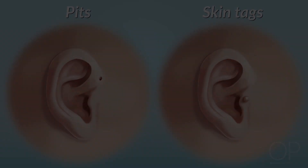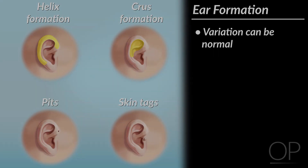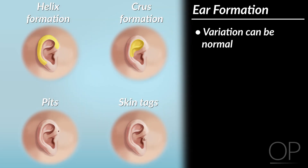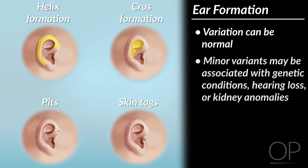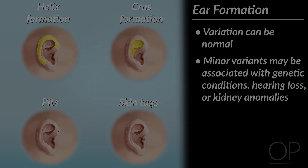While variation in ear formation can be normal, the presence of one of these minor variants may be associated with some genetic conditions, as well as hearing loss or anomalies of the kidneys, the development of which are controlled by some of the same genes as the ears.